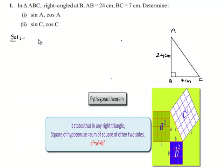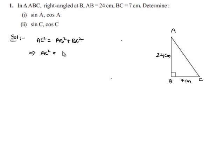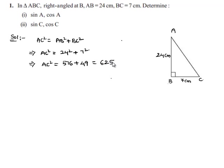From Pythagoras theorem, we know that the square of the hypotenuse is equal to the sum of squares of the other two sides in a right angle triangle. This implies AC² = AB² + BC² = 24² + 7² = 576 + 49 = 625. Therefore, AC = √625 = 25 cm. We got the hypotenuse as 25 cm.